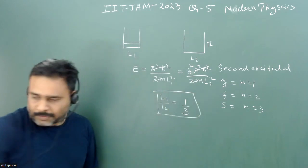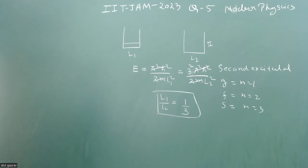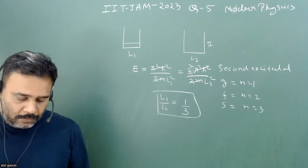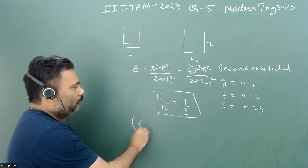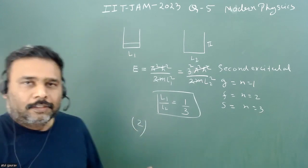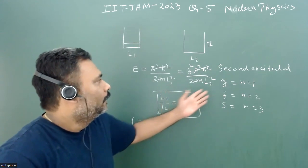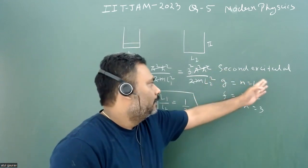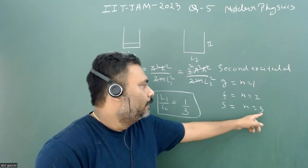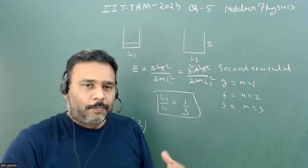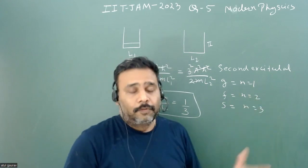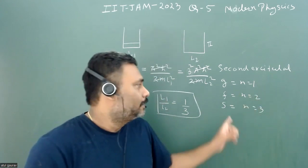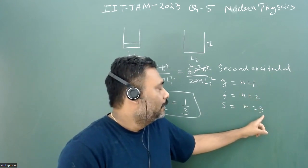I think option number 2 is correct. The catch is understanding what is second excited state. For the second excited state, n=3. A lot of people will make the error of putting n=2 for second excited state, but this is not correct. Second excited state is n=3.